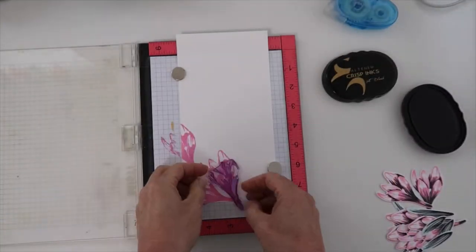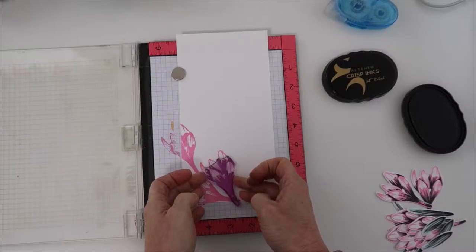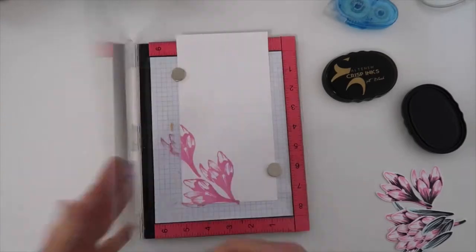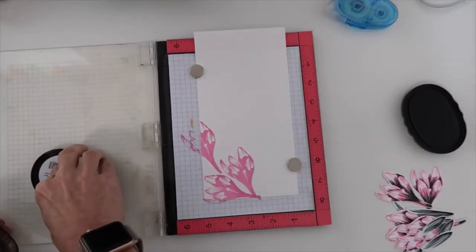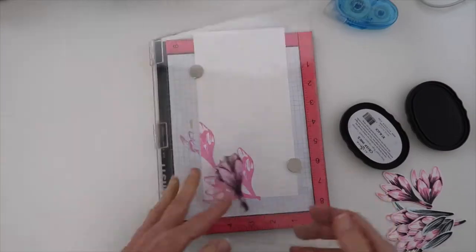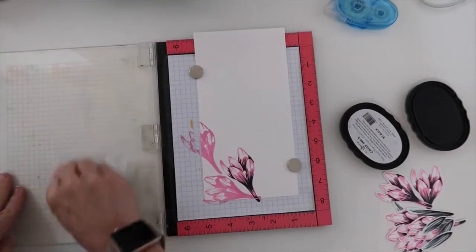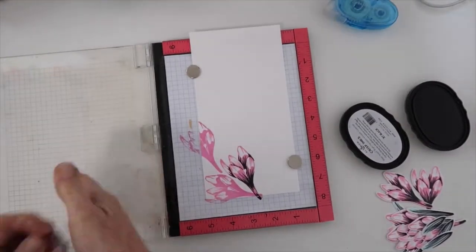But I know that I'm going to cover some of this up, so I just really want to have a nice cluster of the flowers on the bottom left side here. And then I am going to pull in another stamp set to create some layers on top of that.